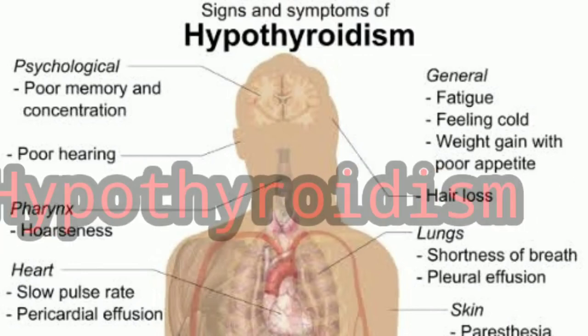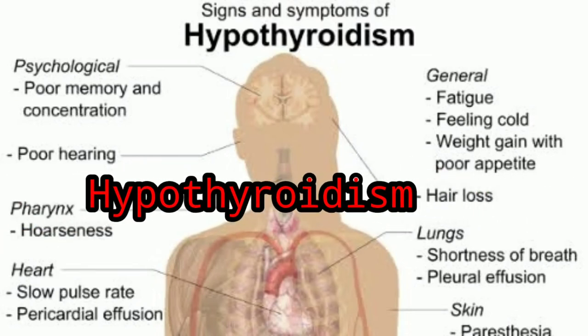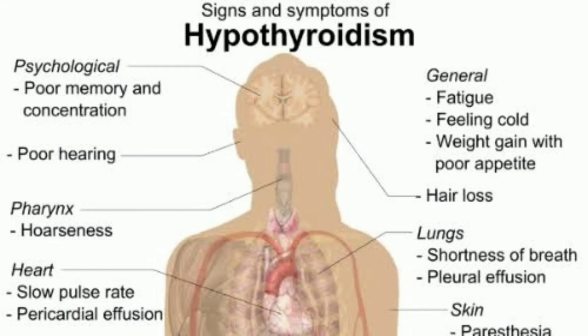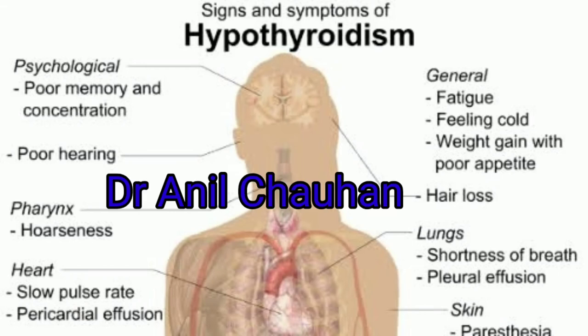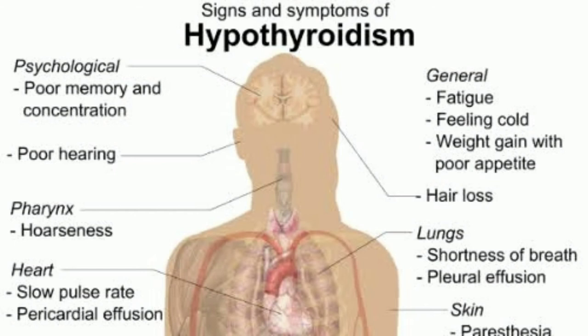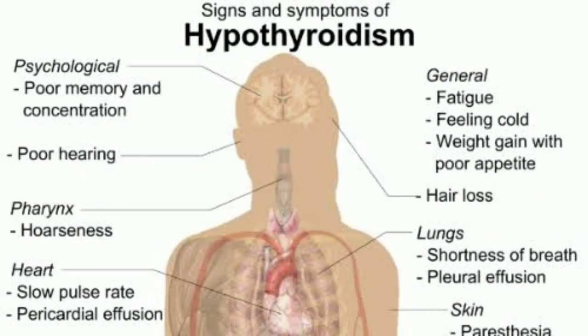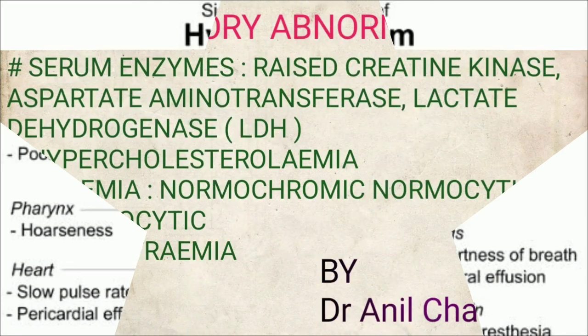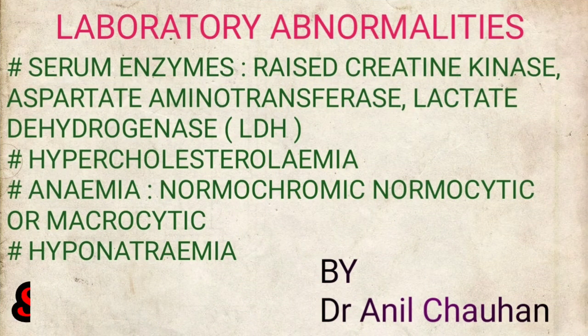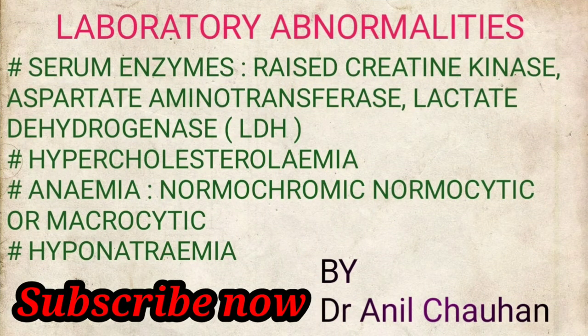Signs of hypothyroidism: in the lungs, shortness of breathing and pleural effusions; in the heart, slow pulse rate and pericardial effusion; in the larynx, hoarseness and poor hearing; in psychological function, poor memory and concentration.